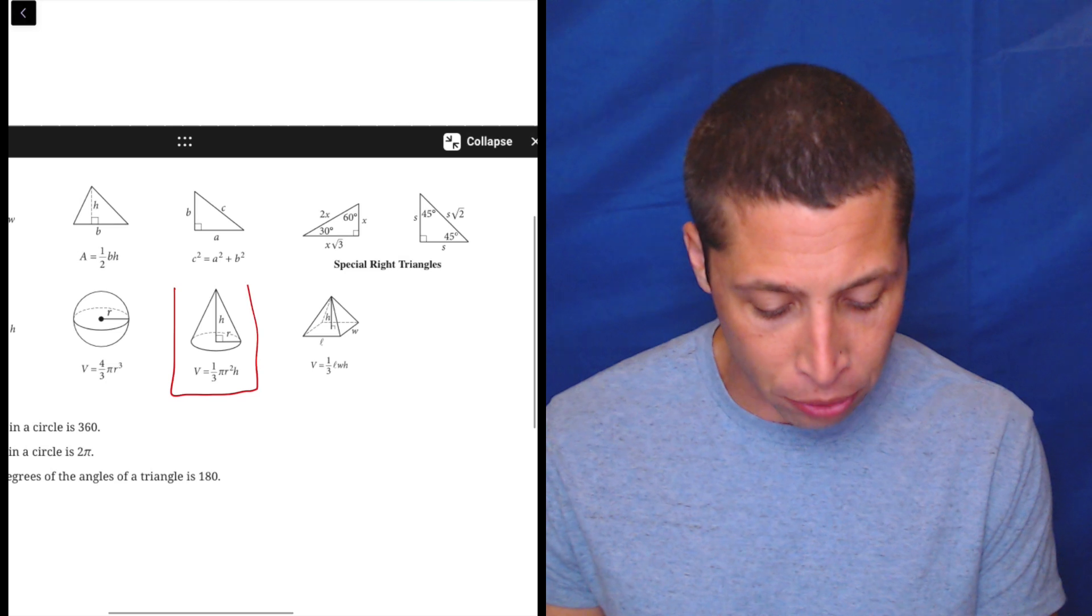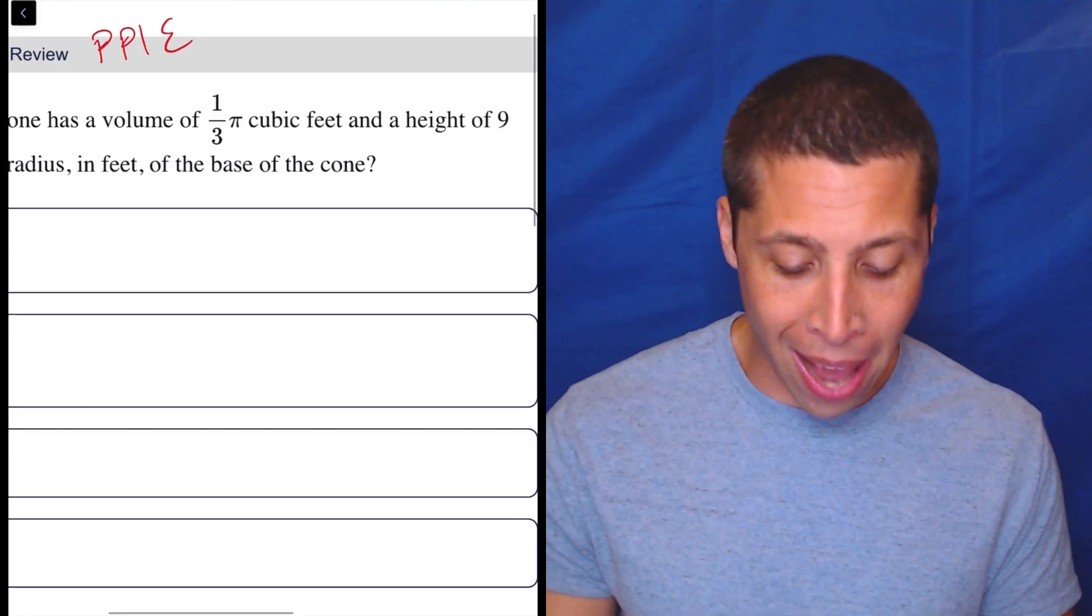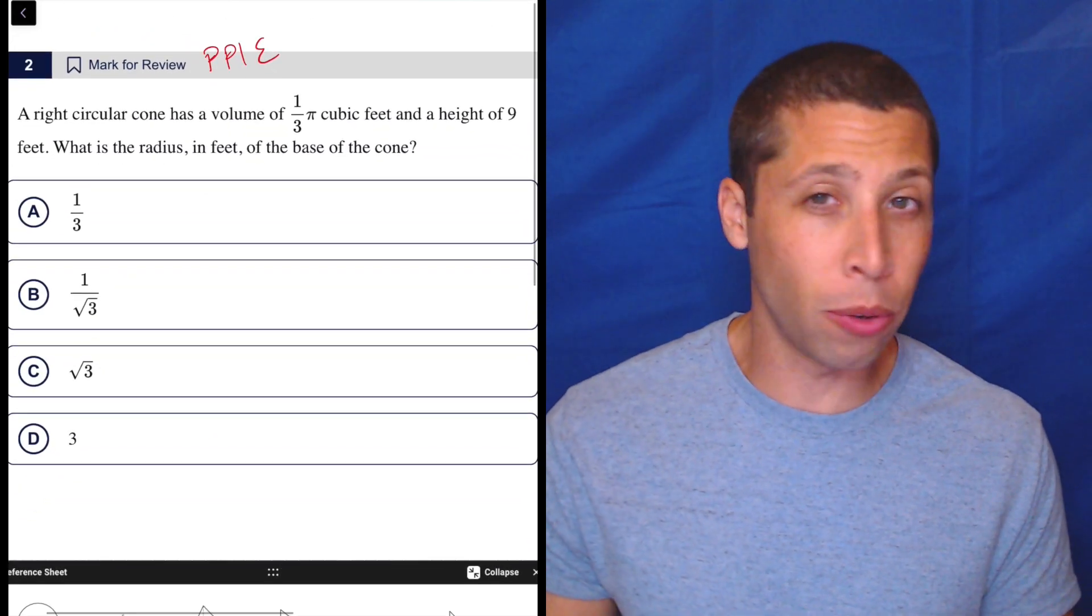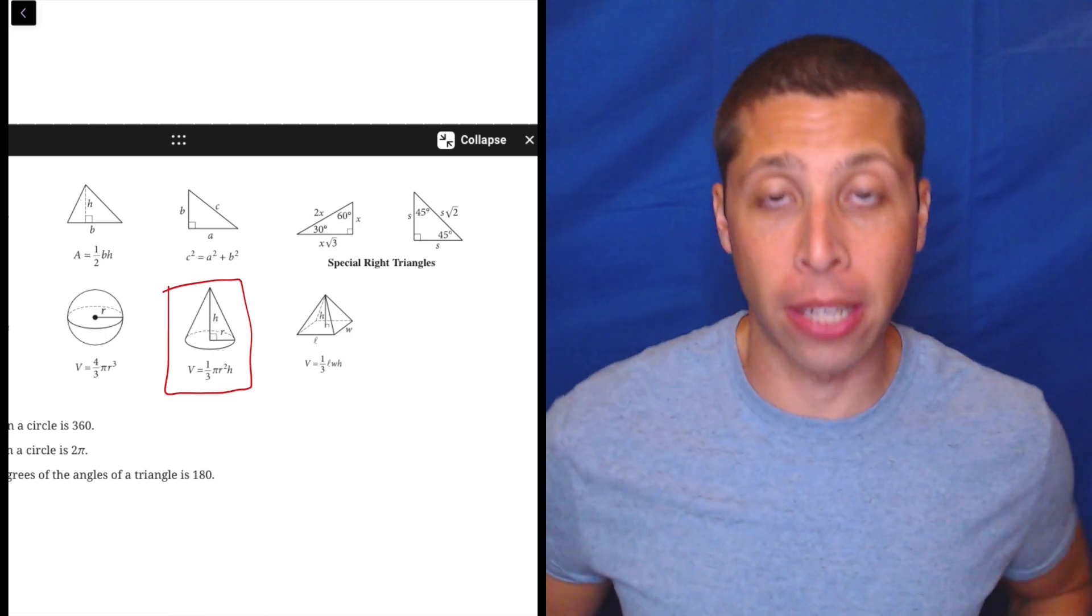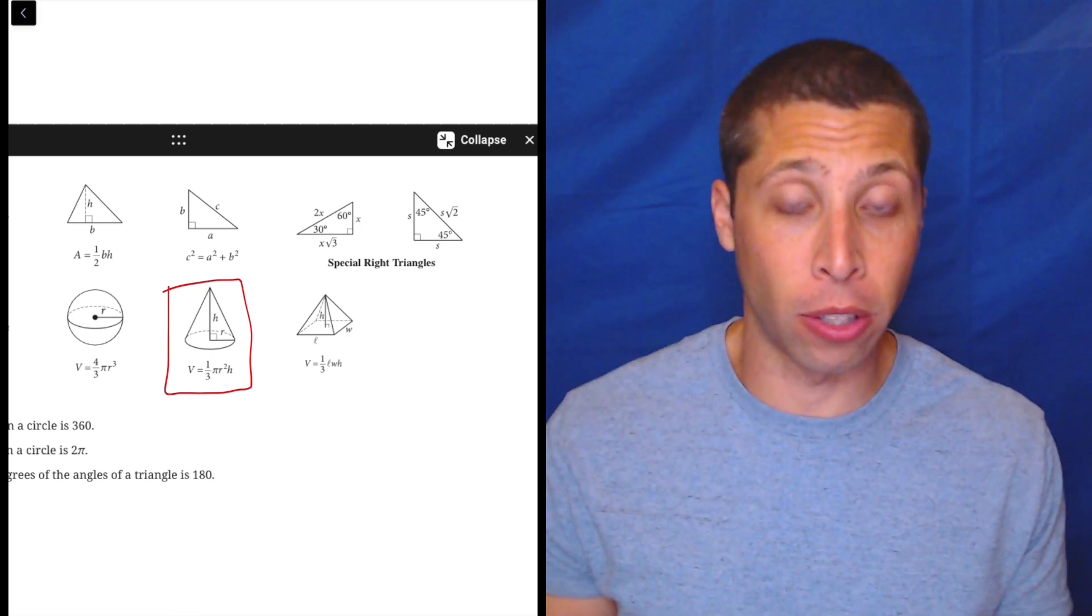So you have to know what a cone is. It's not labeled, but that's a cone. Does it matter that it's a right circular cone? No, that just means that the height is going to be perpendicular to the radius. So perpendicular, that's a right angle. That's why it's called the right cone.